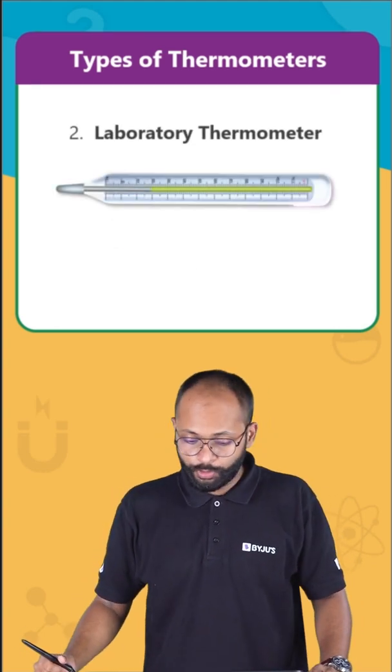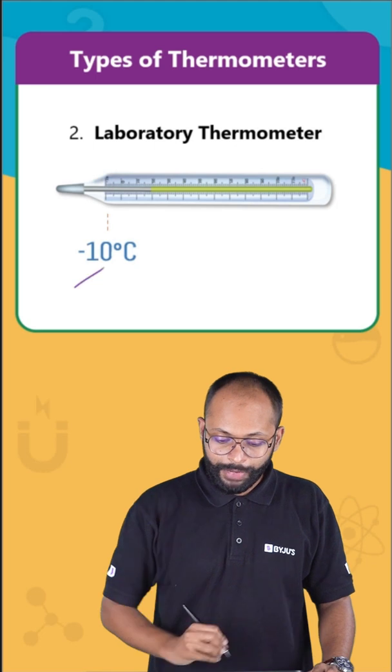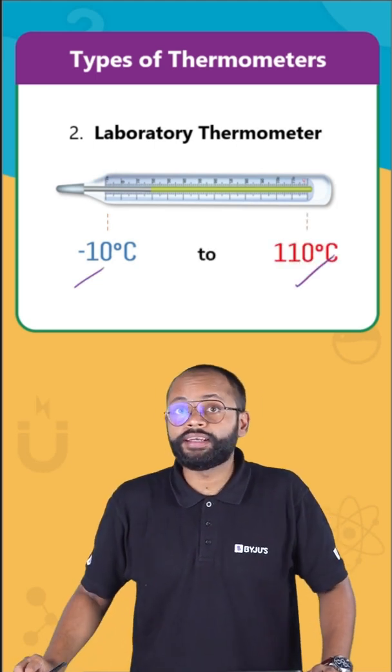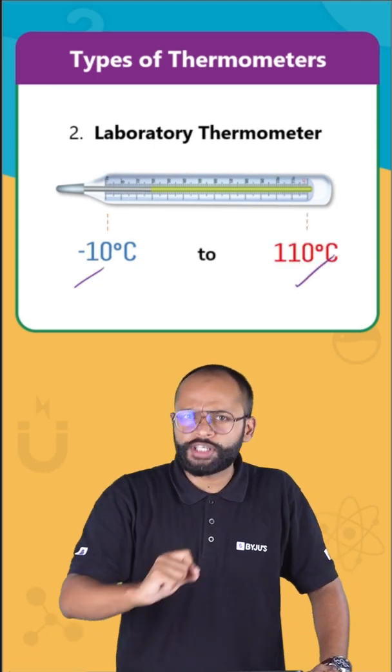The laboratory thermometer has a range from minus 10 to 110 degrees Celsius. Now, what is the object for which you want to measure the temperature? It's chilled water.